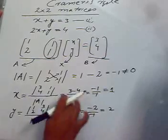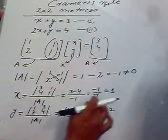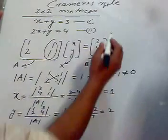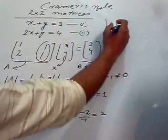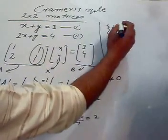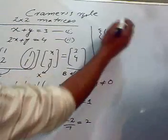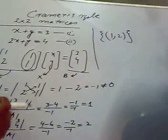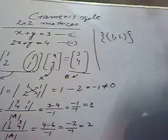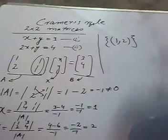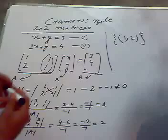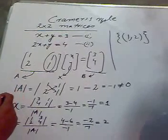Now the values of x and y are now known and these are 1 and 2. And if we want to write their solution set, we will write it in this form. This will be 1 and this will be 2. So this is actually the Cramer's rule for 2×2 matrices and to solve that for 3×3 matrices, method is the same but we will discuss it in the future lecture.